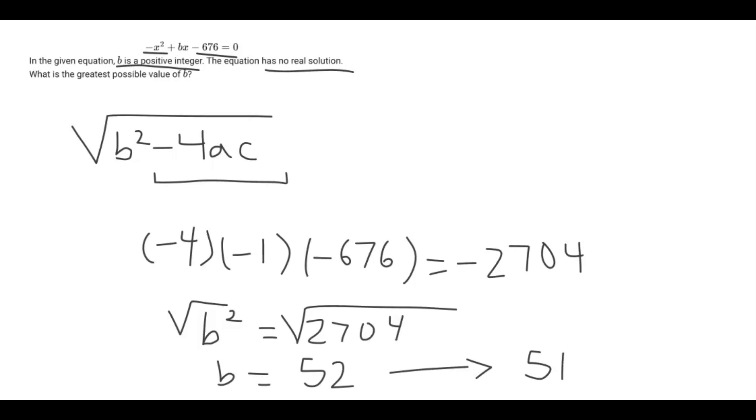The greatest possible value for B is 51, because if we test this, 51 squared is 2,601, and that is indeed smaller than 2,704. So if you did the math there, you would get a negative value, and the discriminant would have a negative value, meaning you would get no solution. That ultimately solves the problem.